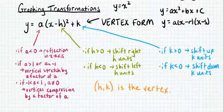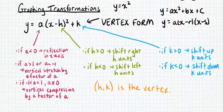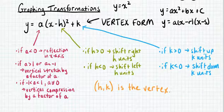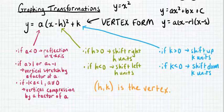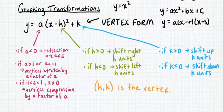The k value tells us where the graph is shifting up or down. If k is greater than 0, we shift up k units. If k is less than 0, we shift down k units. After these left/right and up/down shifts are applied, the coordinates h comma k — the h and k from this vertex form equation — give us the location of the vertex on the graph.